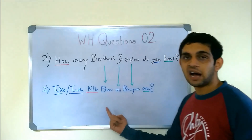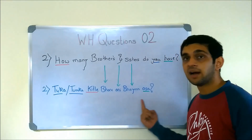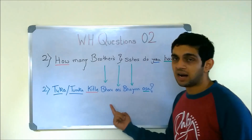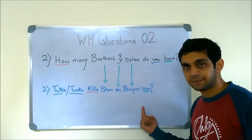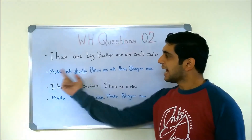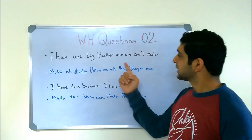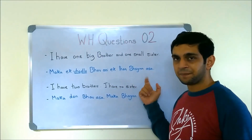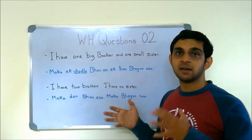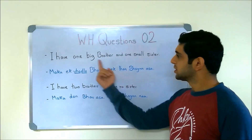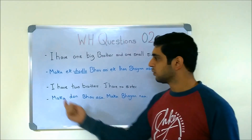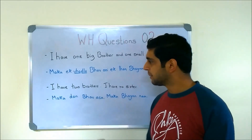TUKA KITLE BHAAV ANI BHAIN AASA — or you can say TUMKA KITLE BHAAV ANI BHAIN AASA. The answers could be either. For example: 'I have one big brother and one small sister' — or a younger sister. You can change the sentence as you want; you could say 'I have a big sister and a small brother'. I'll tell you the adjectives for them.